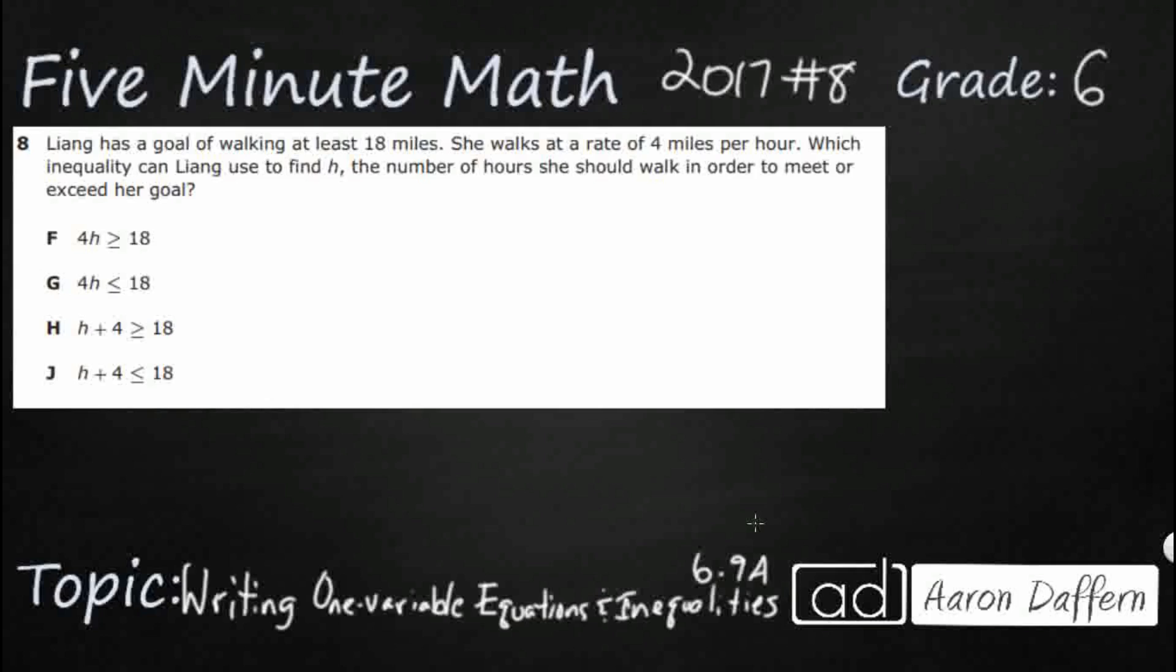So Liang has a goal of walking at least—that's going to be important for us—18 miles and she walks at a rate, so that's going to also be helpful for us, 4 miles per hour, which is a pretty fast walk. Which inequality can Liang use to find the number of hours that she would need in order to meet or exceed? So here we go, meet or exceed, going to be very important for us.